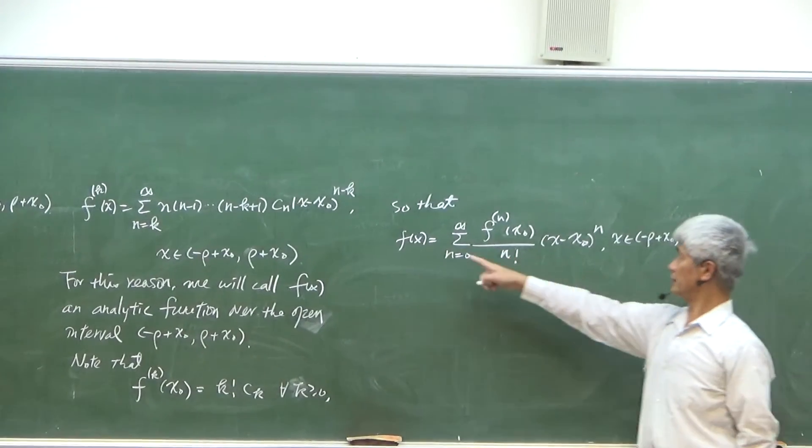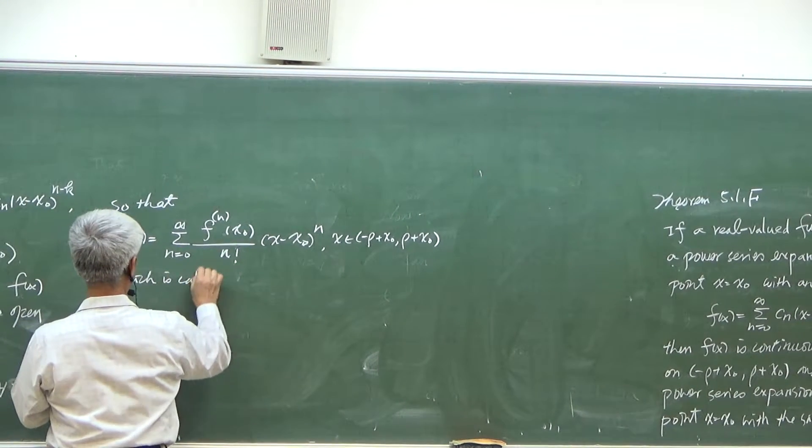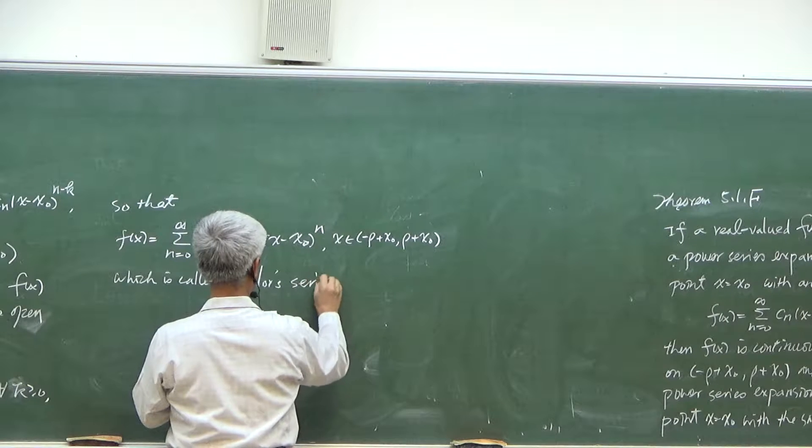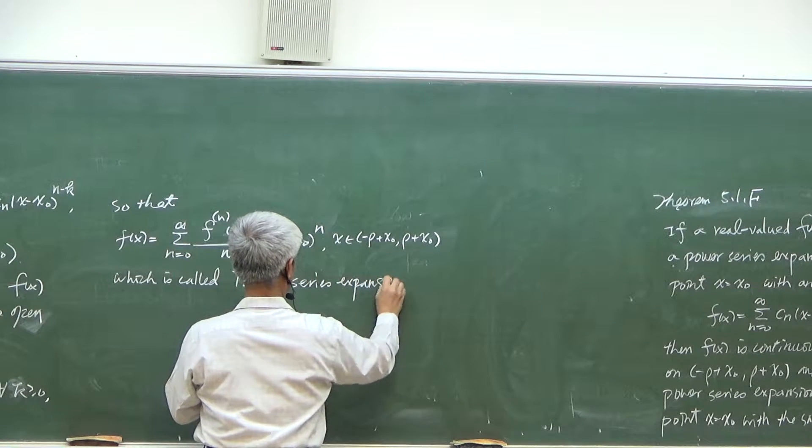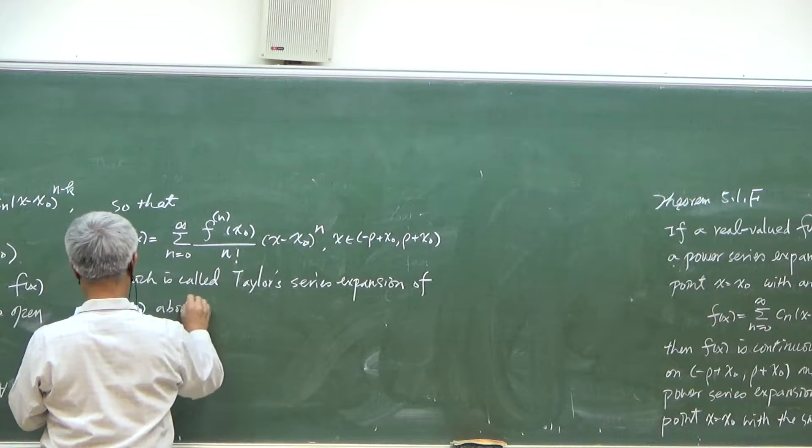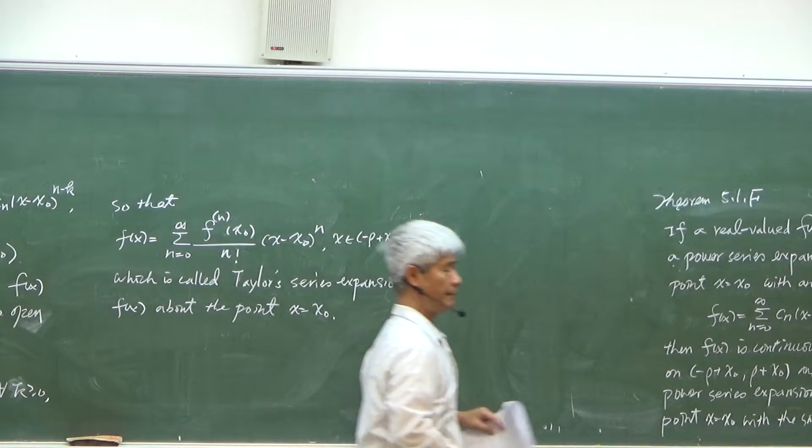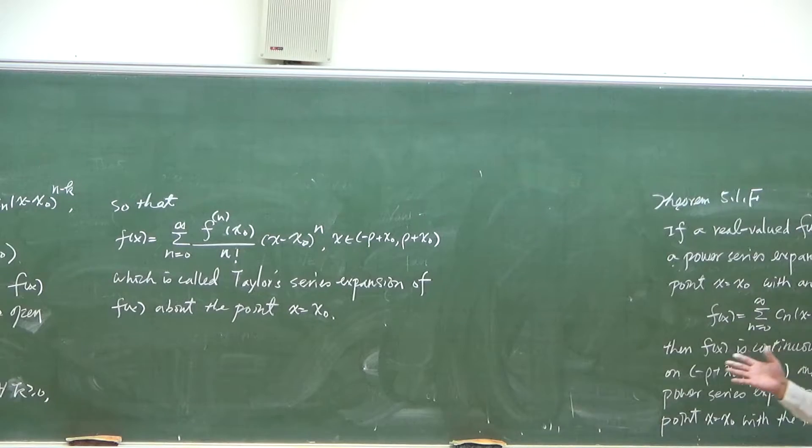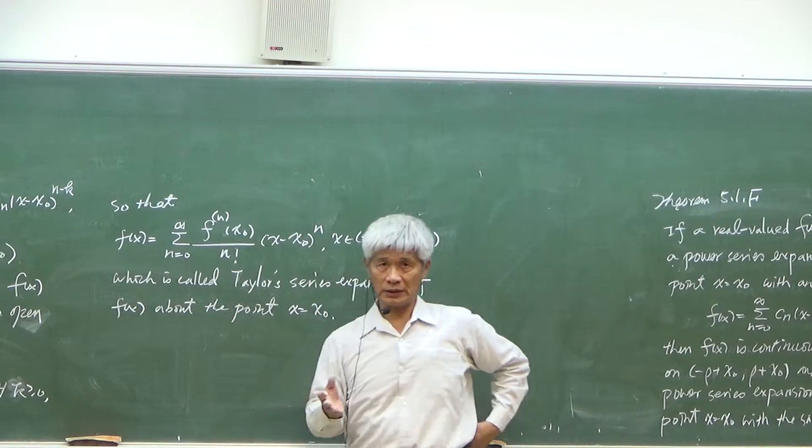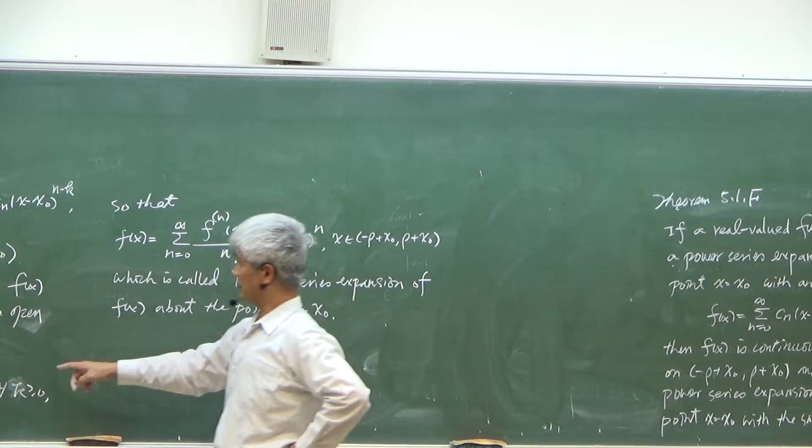So we can write this function, and this one, which is called Taylor series extension. So if a function has a power series extension, then we can always express this Taylor series extension because we know what is the coefficient c_n.